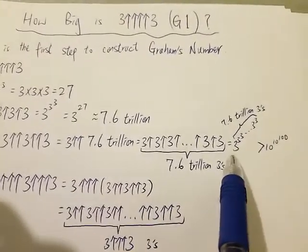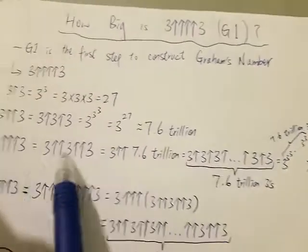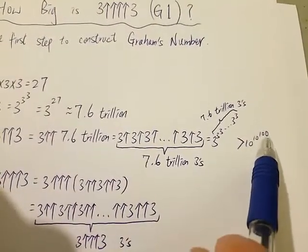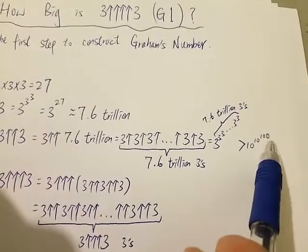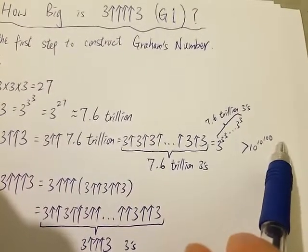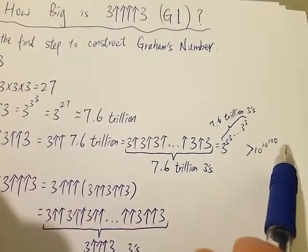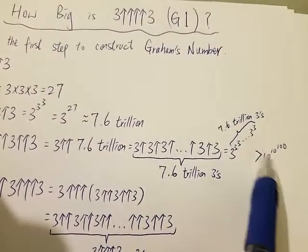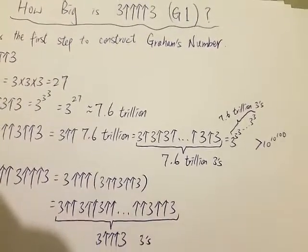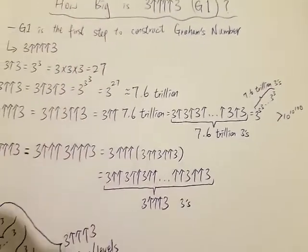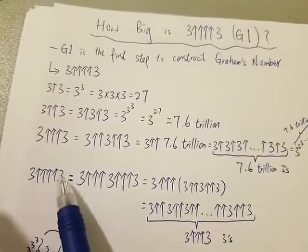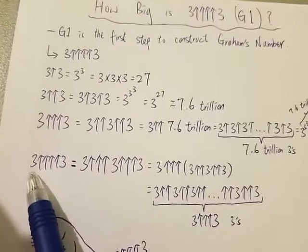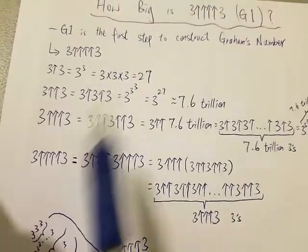As you can see, 3 triple arrow 3 is already way, way bigger than a Googleplex, which is 10 to the 10 to the 100. But this number only has three levels, so you can easily see that this number is way bigger. But what we are trying to find out is not 3 triple arrow 3 — what we want to know is 3, 4 arrows, 3. So one more arrow.